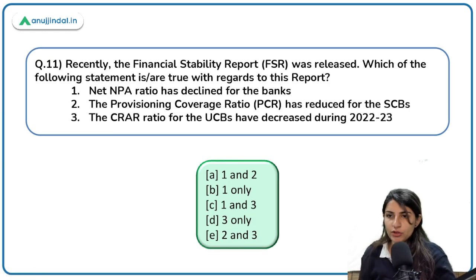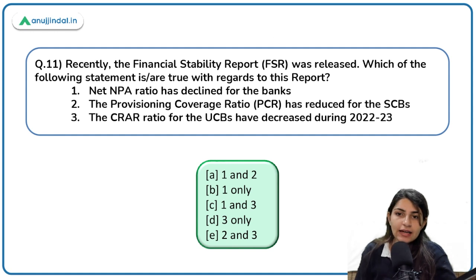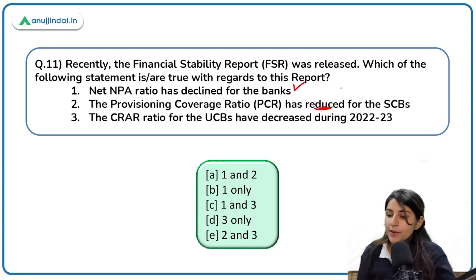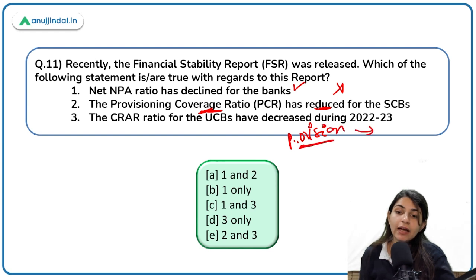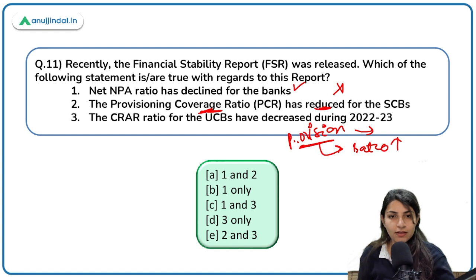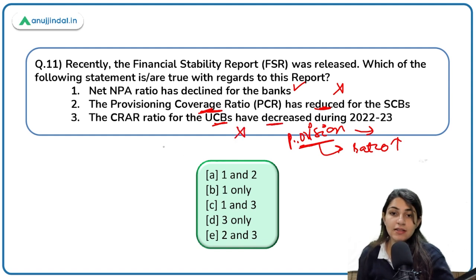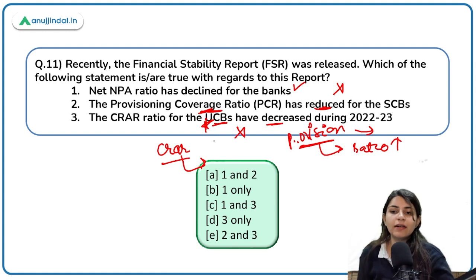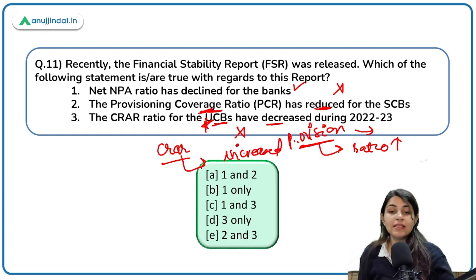From the recently released FSR: the net NPA ratio has declined for banks — correct. Provision coverage ratio has reduced for SCBs — incorrect; it has increased, meaning banks are making more provisioning against NPAs, which is a good thing. The CRAR ratio for urban cooperative banks has decreased — also incorrect; the capital to risk-weighted asset ratio for UCBs has increased over this period. So only the first statement is correct; the other two are incorrect.